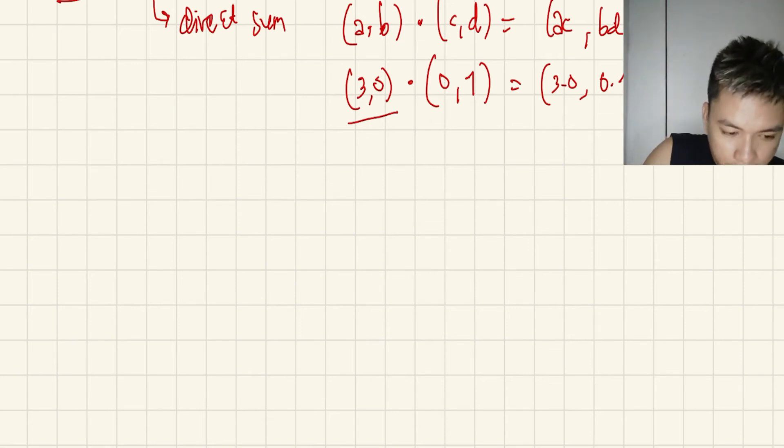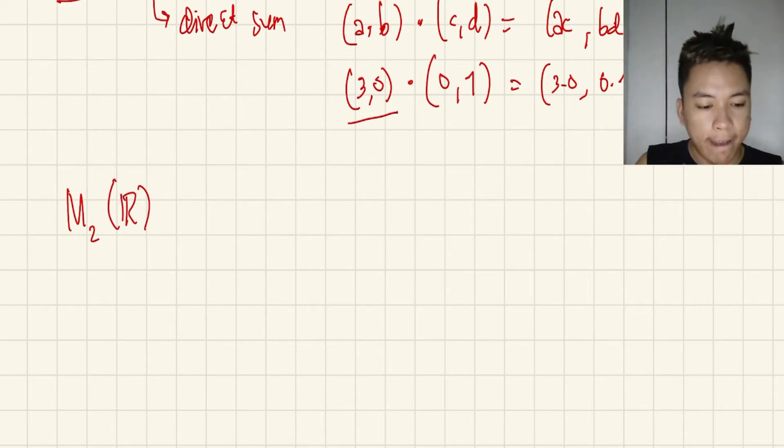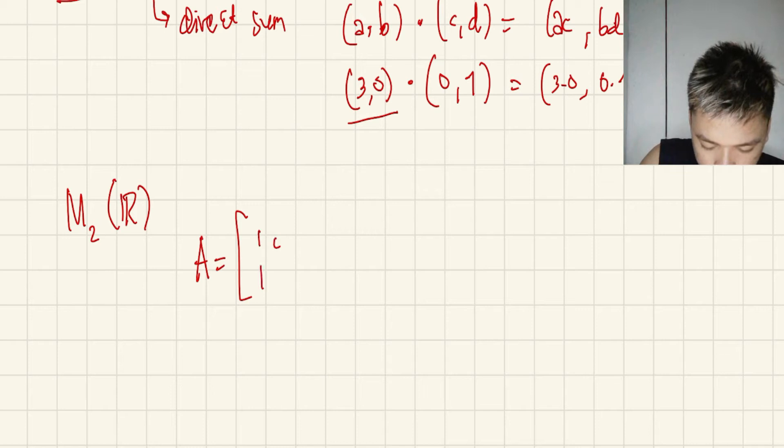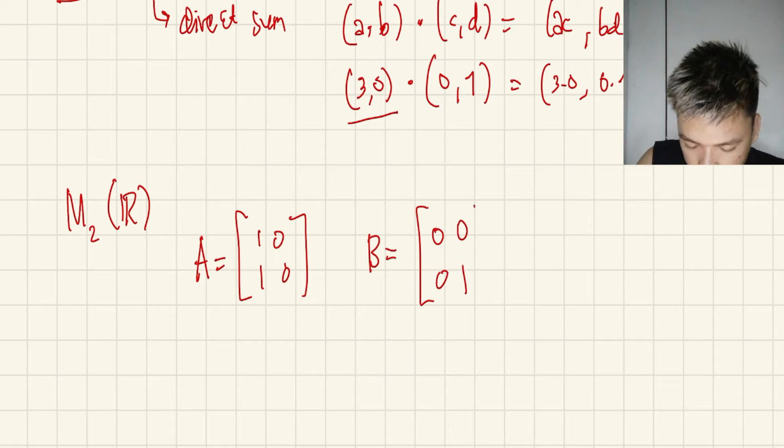So another example, let's consider M2 of R. That means this is 2 by 2 matrices, the set of 2 by 2 matrices having real entries. So if you would like to consider, you have matrix A here: [1,1; 0,0], and you have matrix B: [0,0; 0,1].